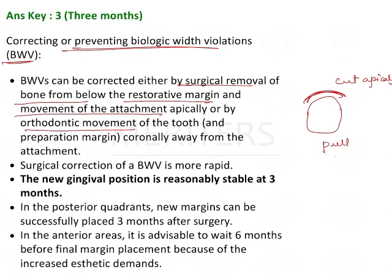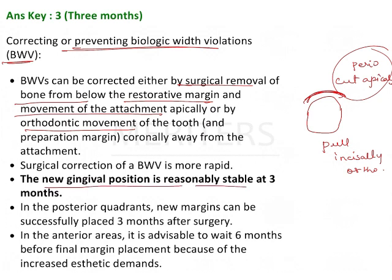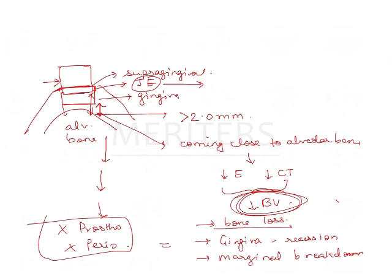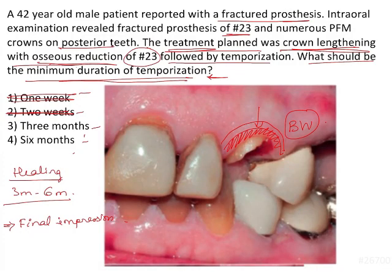In the current question we are talking about crown lengthening. The new gingival position is reasonably stable by three months in posterior quadrants — at three months you can go ahead with placing the margins and finishing the final restoration. In the anterior area, six months is advisable for aesthetic demands. So three months and six months are both correct answers, but since the question asks for the minimum duration, the correct answer is three months.